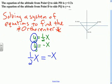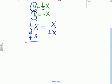They're both equal to y, so I can set them equal to each other. So if I have a negative x here, I'm going to add x to both sides. If I add x to both sides, what do I get? Well, this is 3 over 2x equals 0.